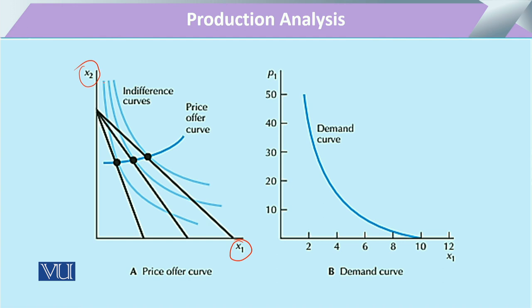Explaining through the graph: on the x-axis is one commodity and on the y-axis is x2, the other commodity. The consumer is indifferent between any combinations of x1 and x2 along the indifference curve — various combinations are possible. Out of these combinations, the consumer is at equilibrium when the indifference curve is tangent to the budget line or income line. When they are tangent at this point, this is the equilibrium at price p1.